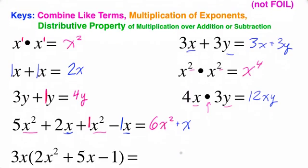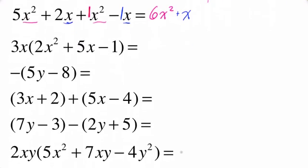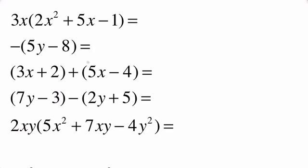After those quick examples, let's start working on some more substantial problems. This first problem is a good example of the distributive property. You don't have to draw the loops, but sometimes it's helpful when you're just starting out. We're literally going to multiply 3x by everything in this addition-subtraction problem, everything in this trinomial. So 3x times 2x squared is 6x cubed. We need to know how to multiply a monomial by a monomial. 3x times 5x is 15x squared. And then lastly, 3x times a negative 1 is a negative 3x. That's a classic example of the distributive property of multiplication over addition or subtraction.